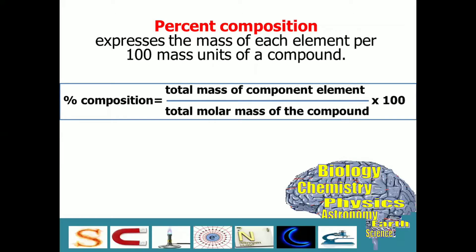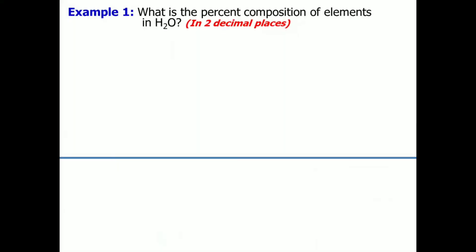For us to visualize and to grasp how to use this formula, let's have this example. What is the percent composition of elements in H2O? Let's express our final answer in two decimal places. We have several steps to follow. Step number 1. Compute for the molar mass of the compound, which in this case is H2O or water.